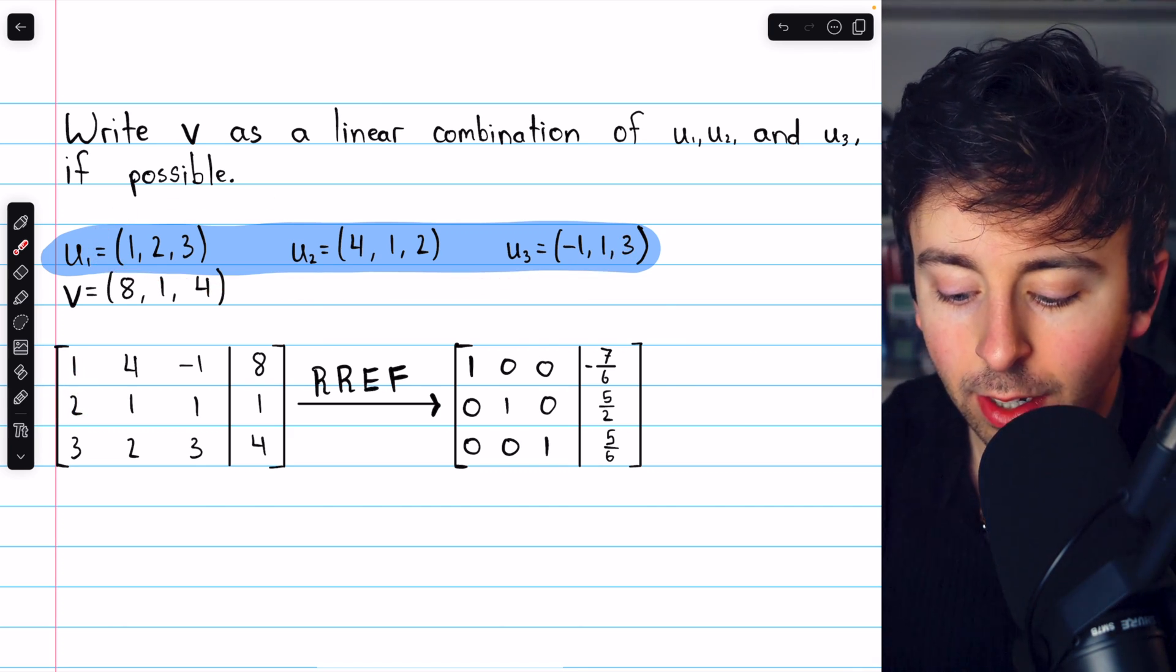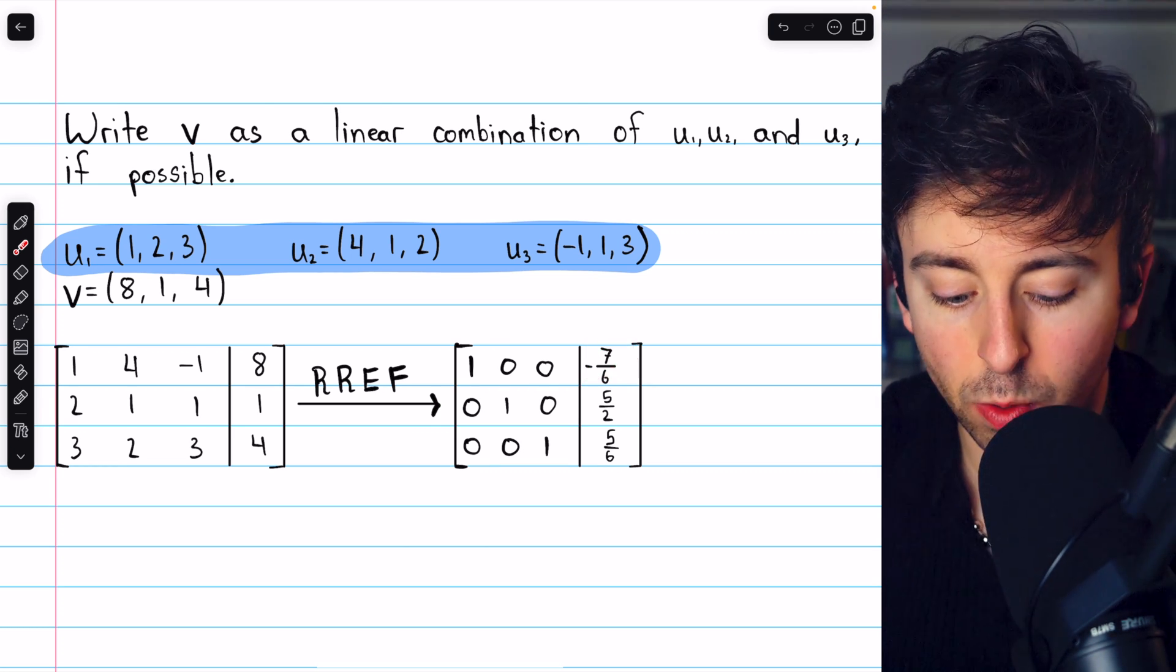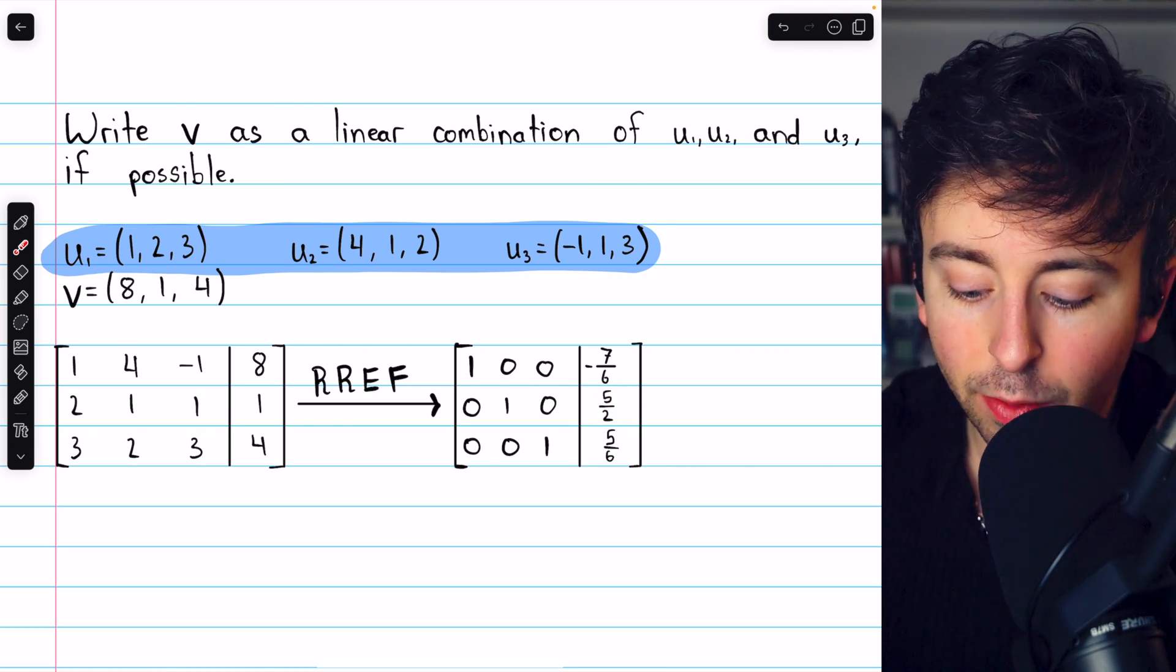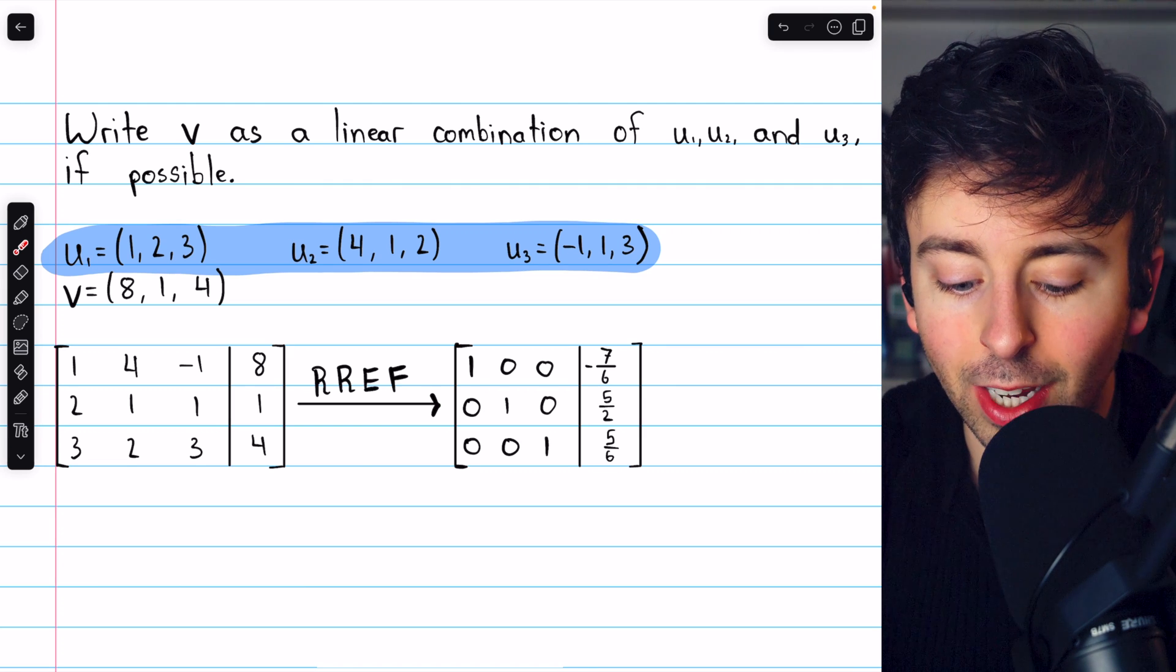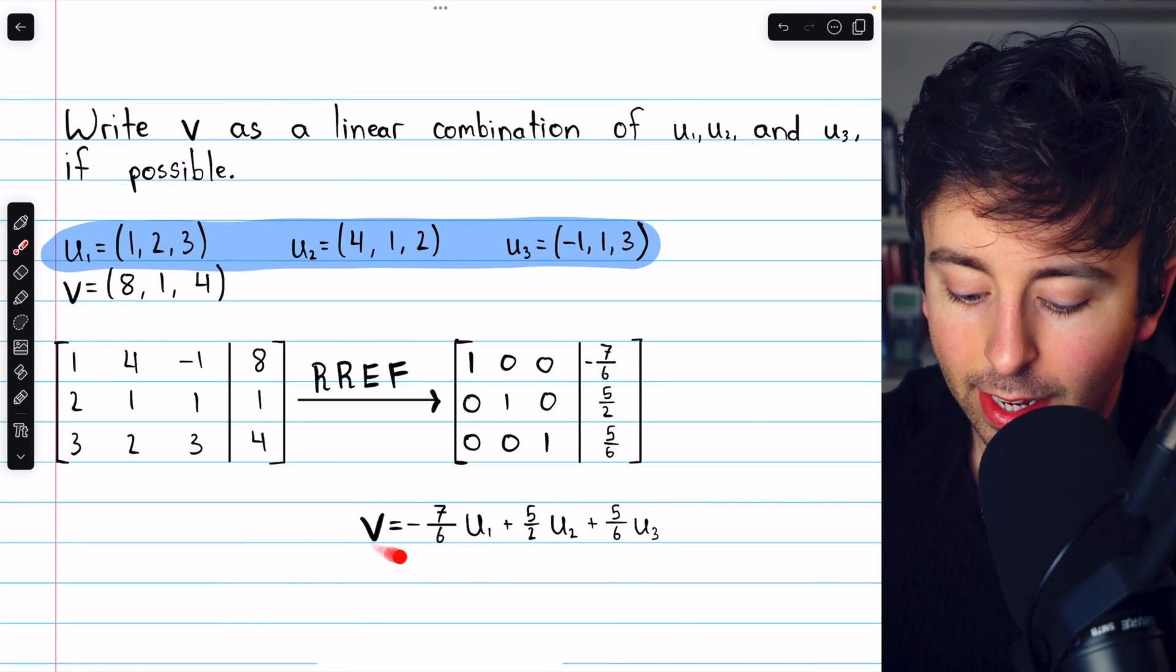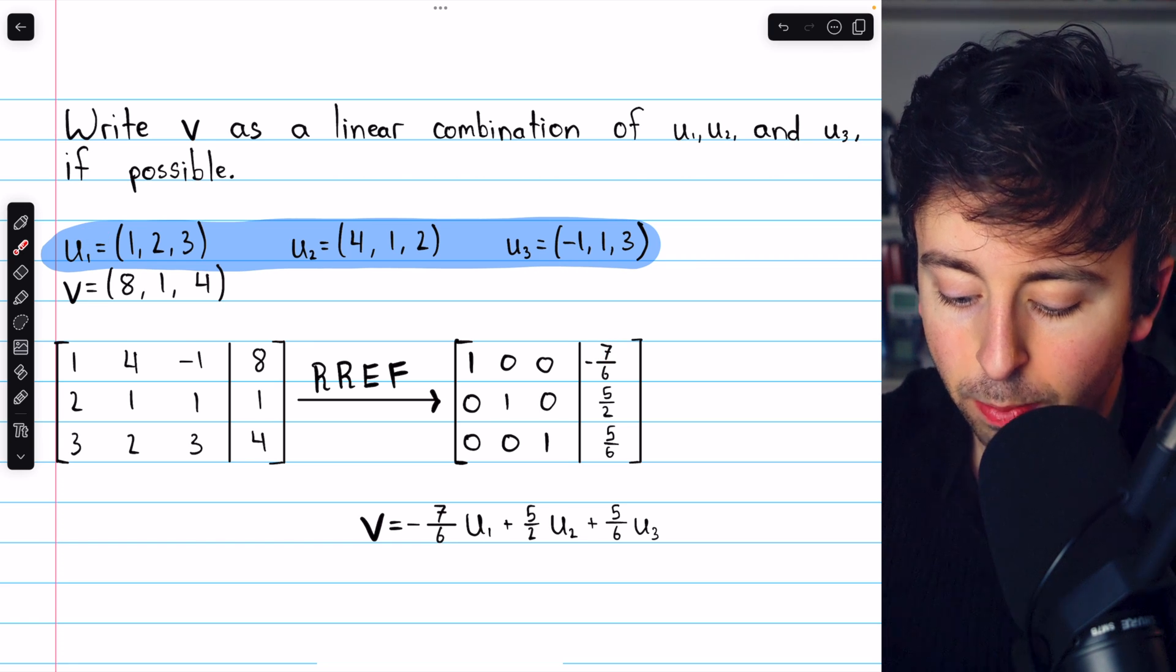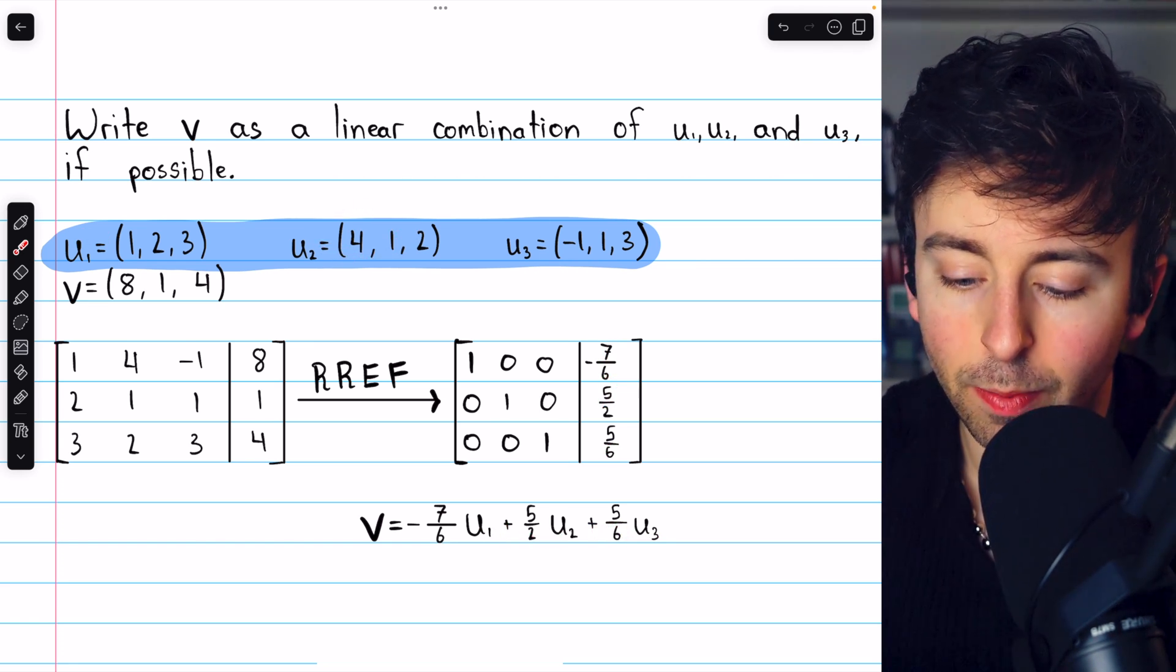How much of u1 do we need? We need -7/6 times u1. How much of u2 do we need? We need 5/2 times u2, and we need 5/6 times u3. Multiply those, add them together, you're going to get the vector v. And there that is, v equals -7/6 times u1 plus 5/2 times u2 plus 5/6 times u3.